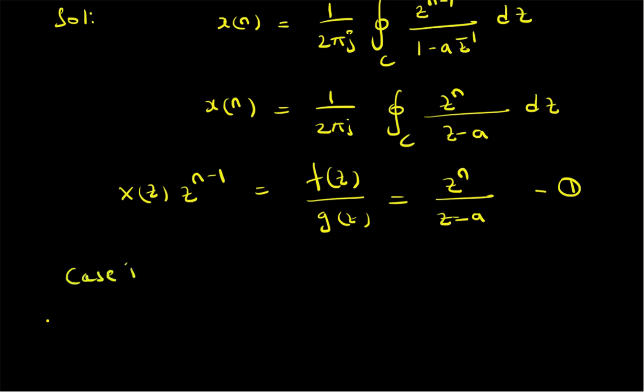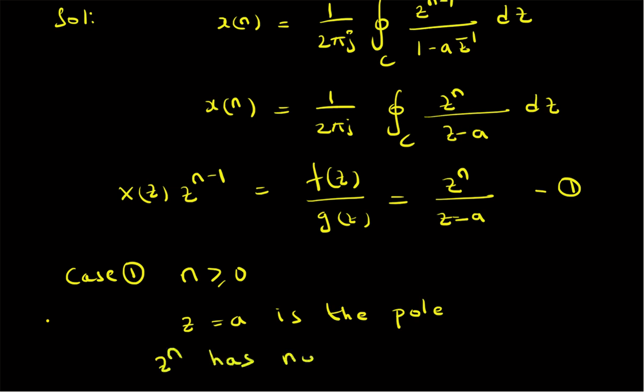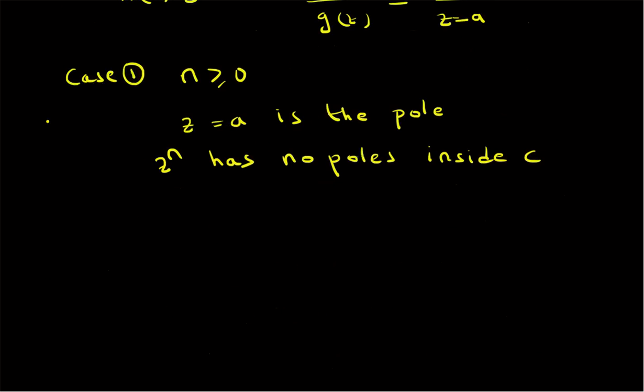Consider Case 1 where n is non-negative, that is n ≥ 0. In this case, z = a is the pole, the root of g(z). The numerator z^n has no poles inside contour C, since z^n goes to infinity only at z = infinity, so z^n has no poles inside C.